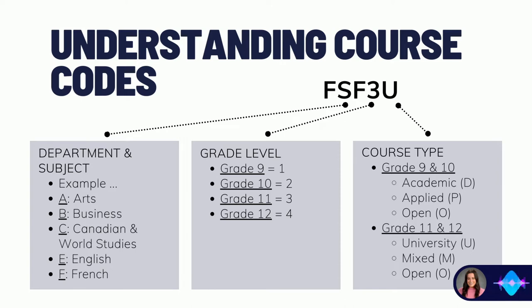Finally, each course code ends in an additional letter that tells you the level or type of course. In grade 9 and 10, you can see D for academic, P for applied, or O for open. At the grade 11 and 12 level, U stands for university level, M stands for mixed university and college level, and O stands for open.